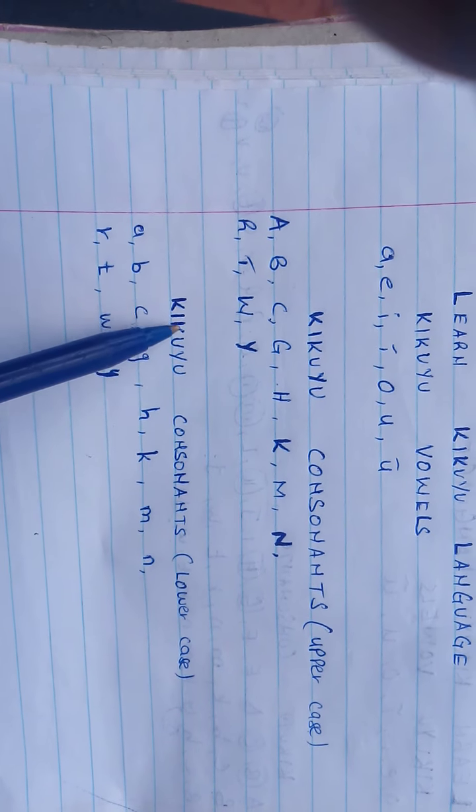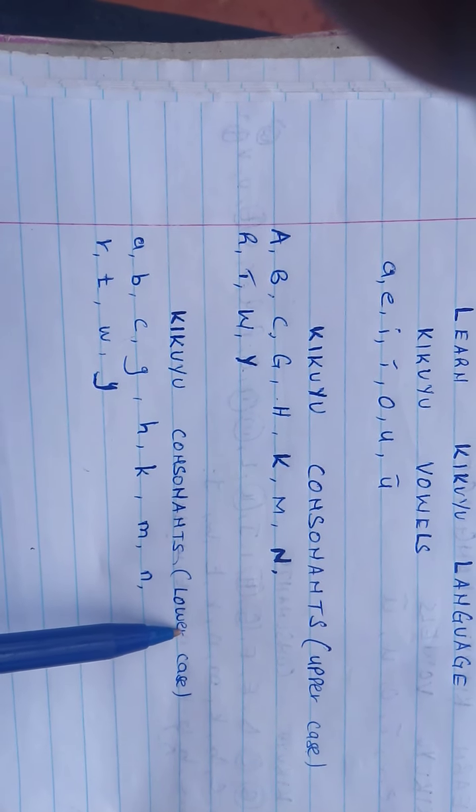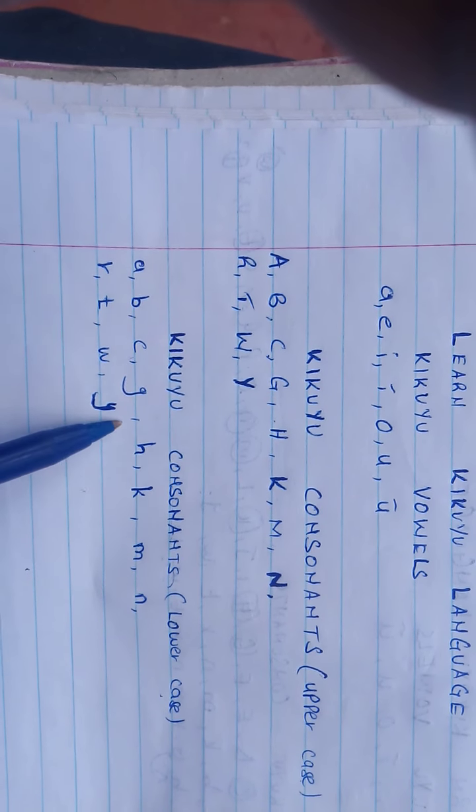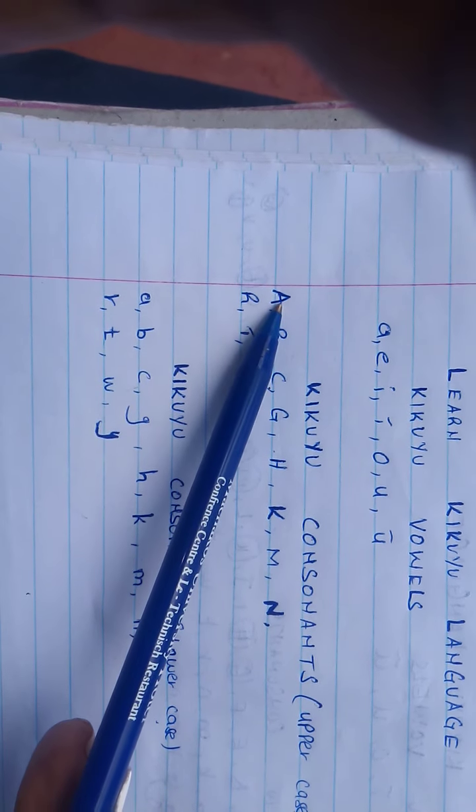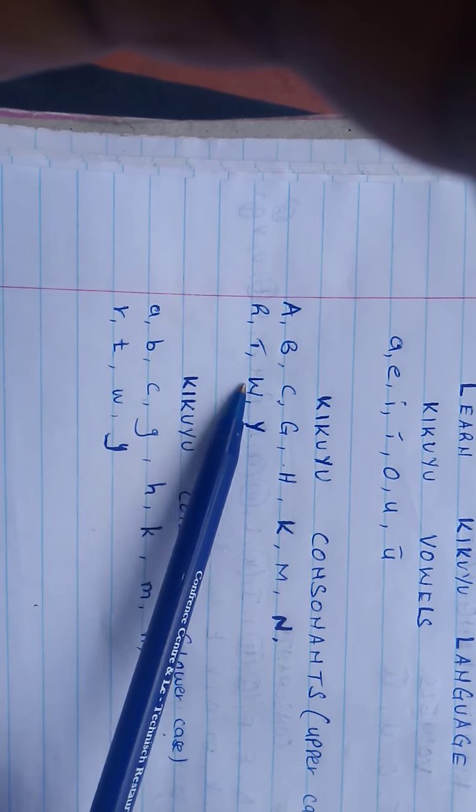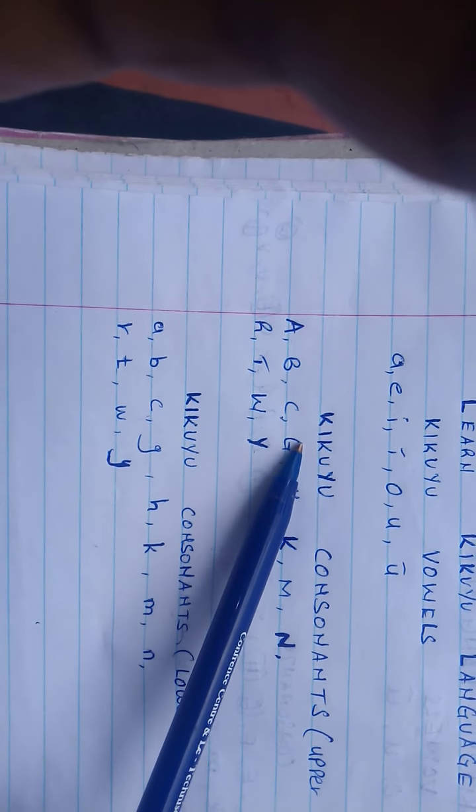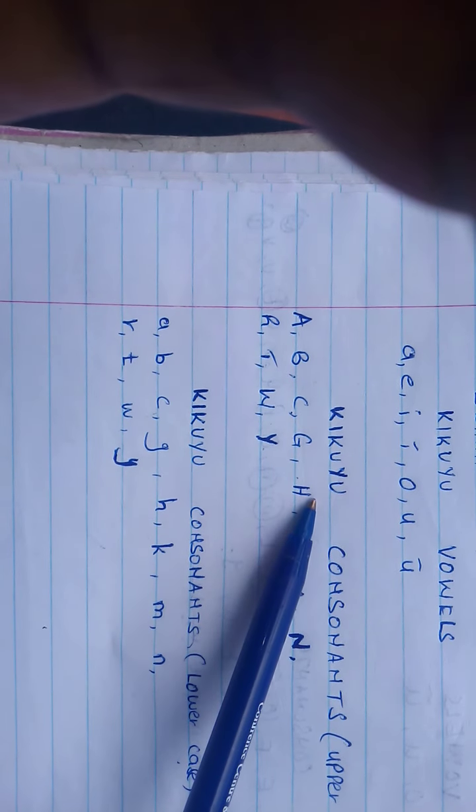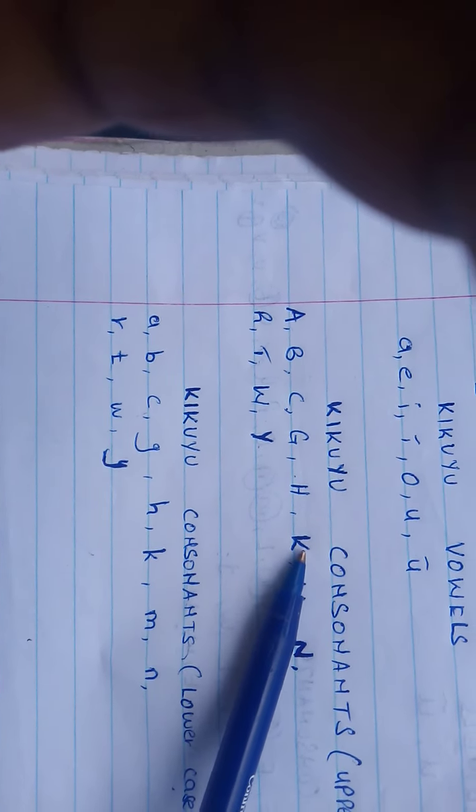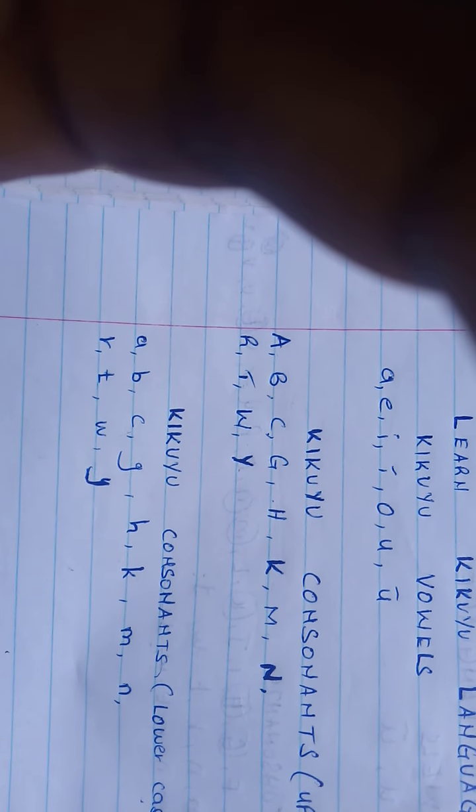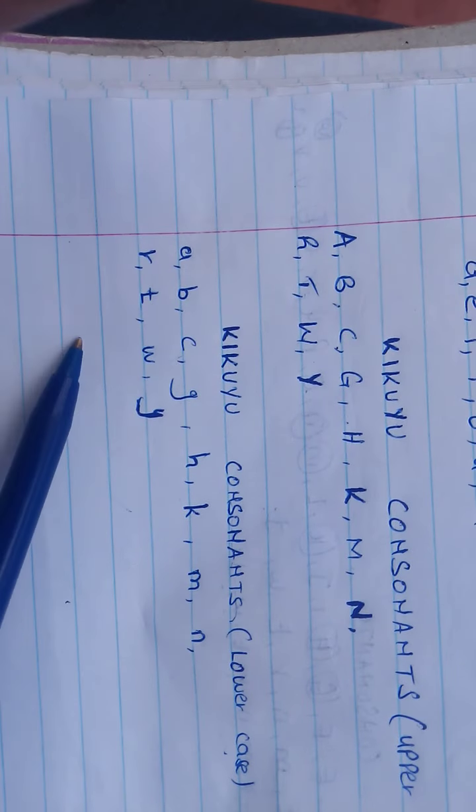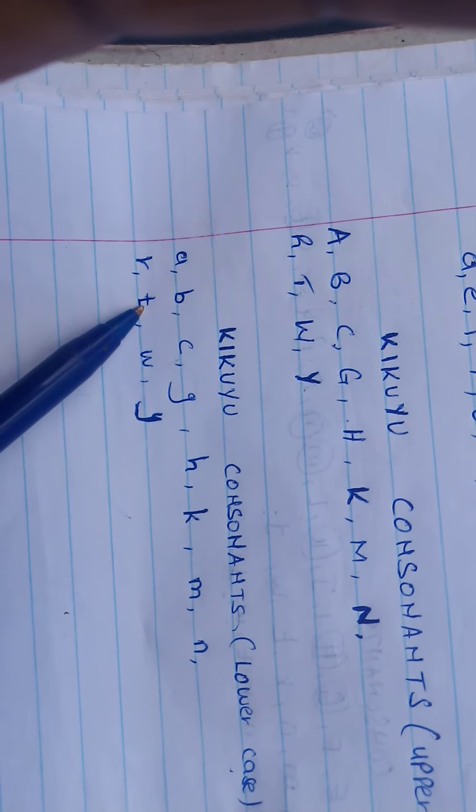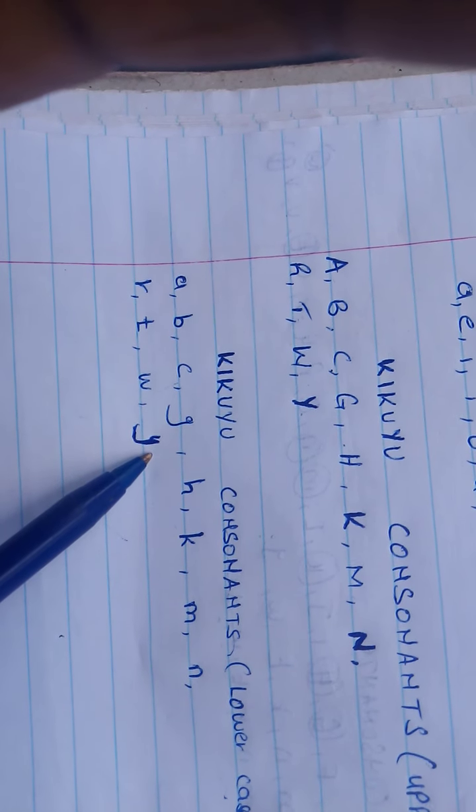However, we have the same consonants but in lower cases. They are written in A. A, this is A for this A, we have B for this B, we have C for this C, we have G for G, we have H for H, then we have K for this K, and then we have M, M, then we have N, then we have R, we have T, we have W, and then we have Y.